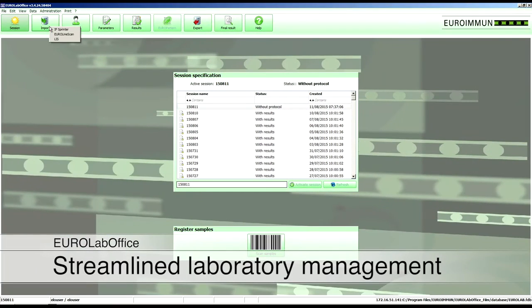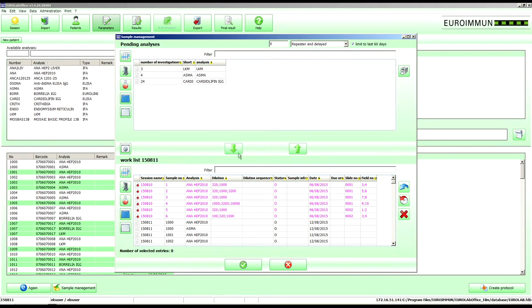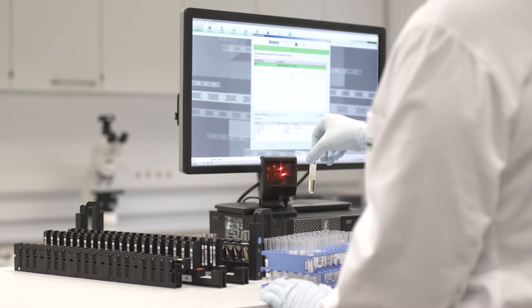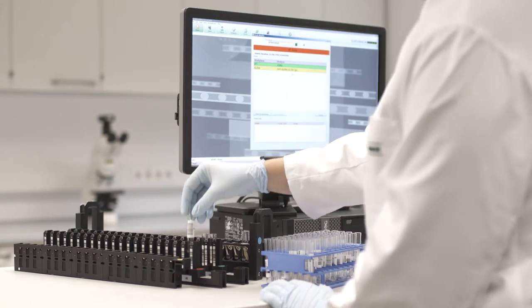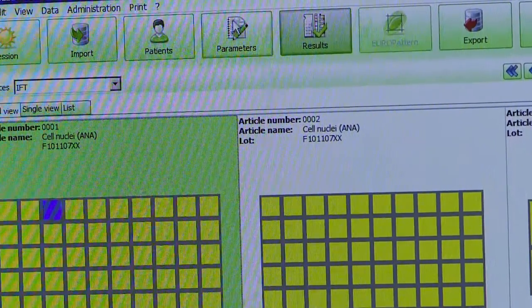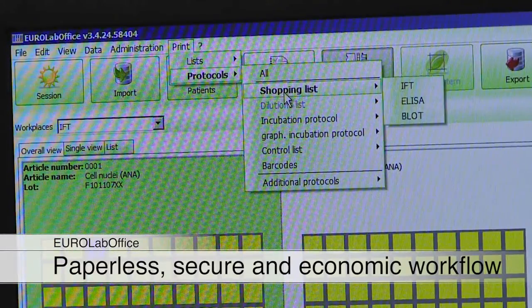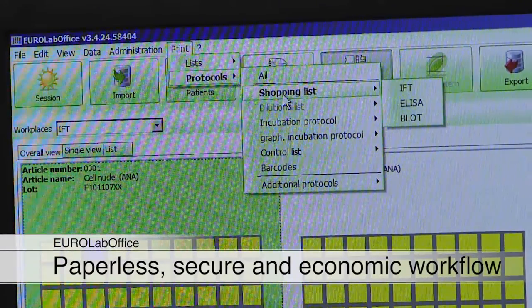The user-friendly software supports you in managing your samples and requests and in the electronic creation of all worklists. Alongside improving efficiency, it increases the integrity of results owing to completely paperless processes, from the requirement to the definitive finding. The automated article selection during the creation of worklists helps minimize the incurring material costs.